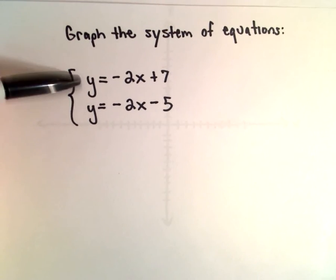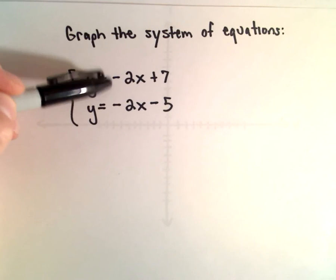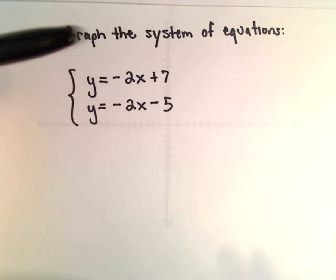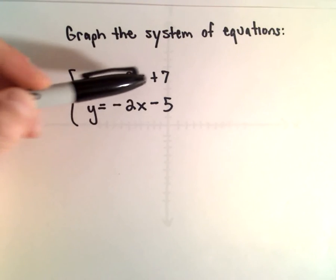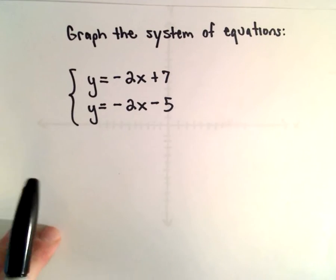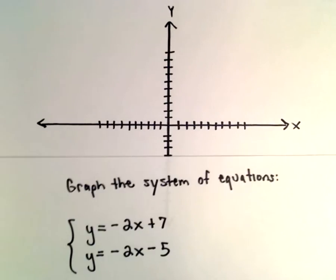Notice both of these are linear equations. They both have the same slope of negative 2. The only thing that's different is the y-intercept. One has a y-intercept of positive 7 and the other has a y-intercept of negative 5.